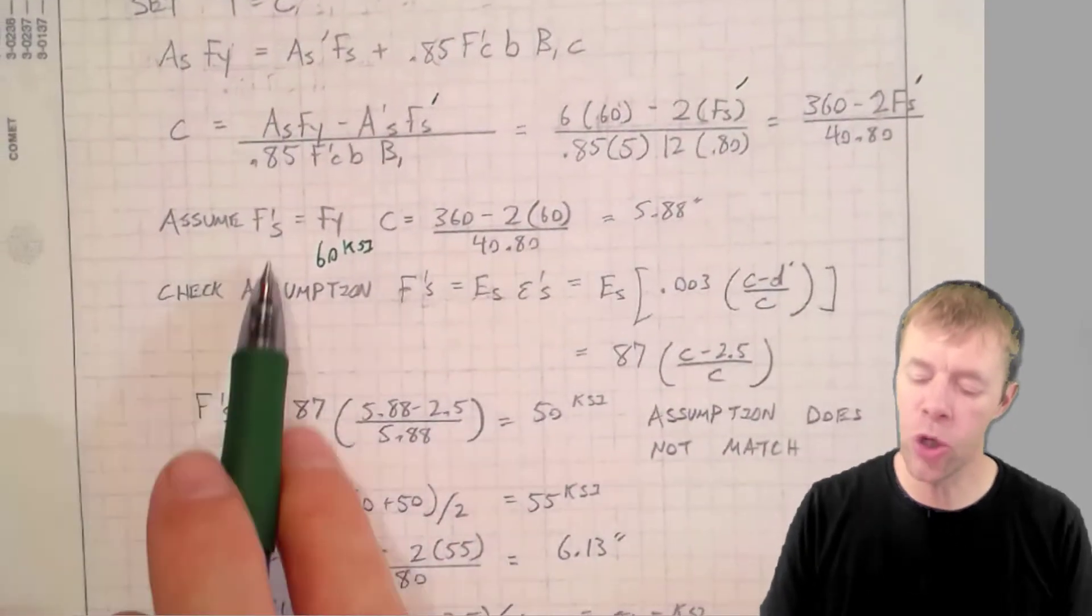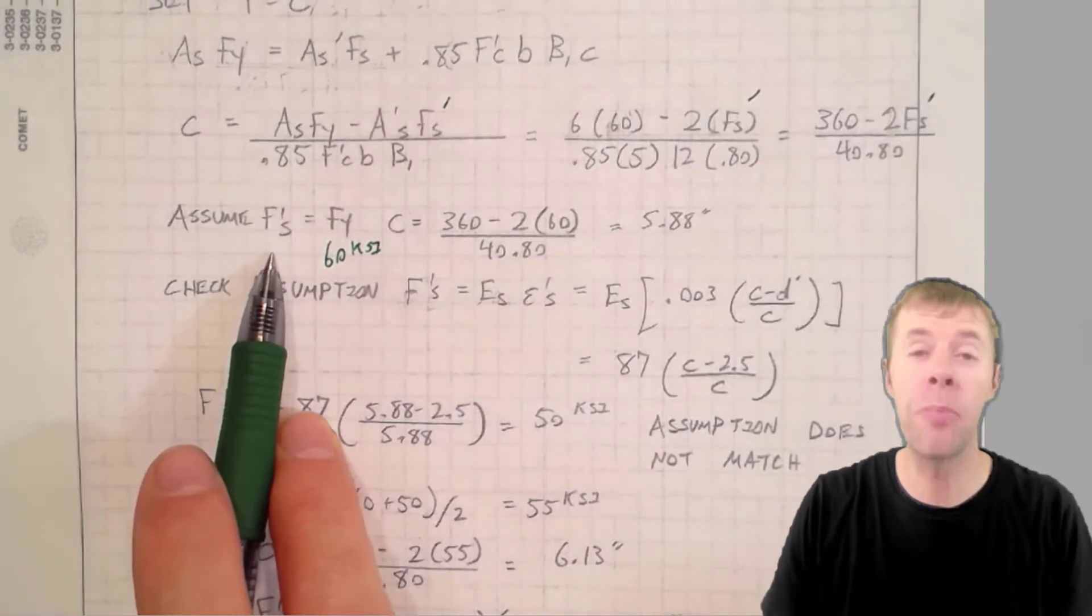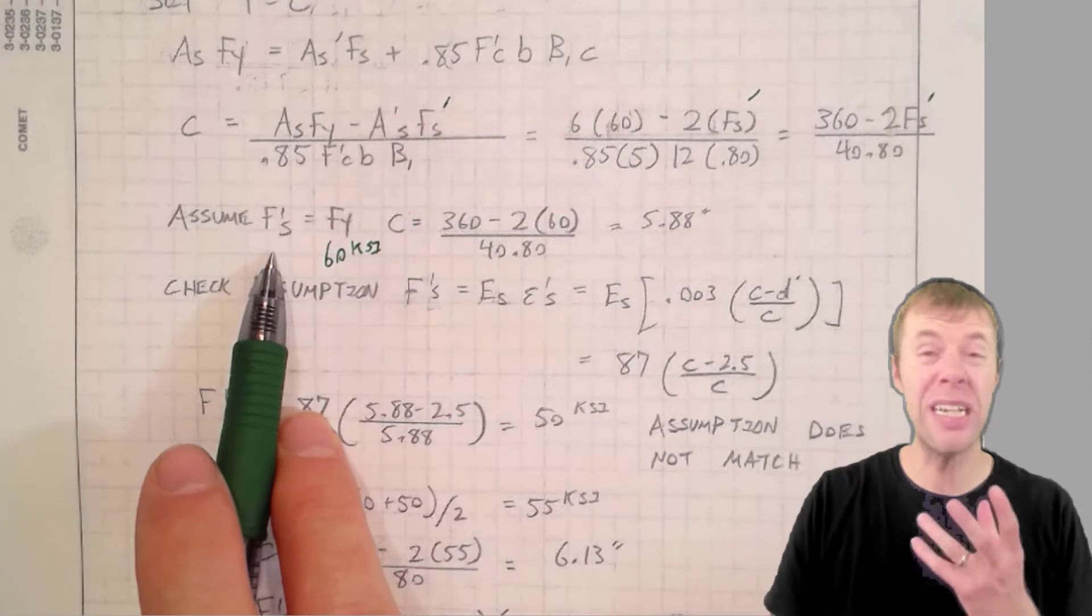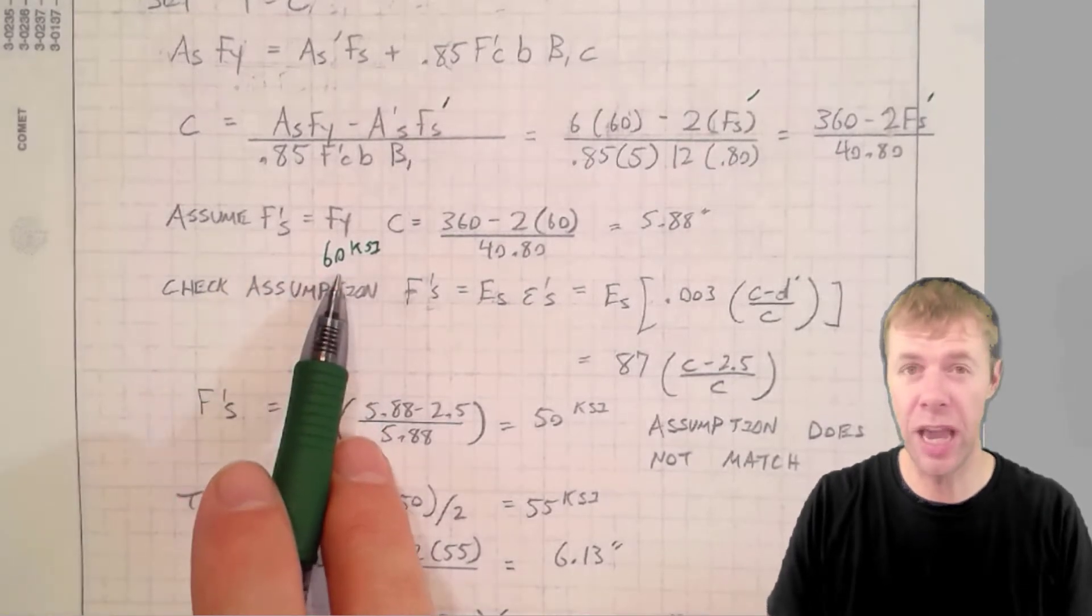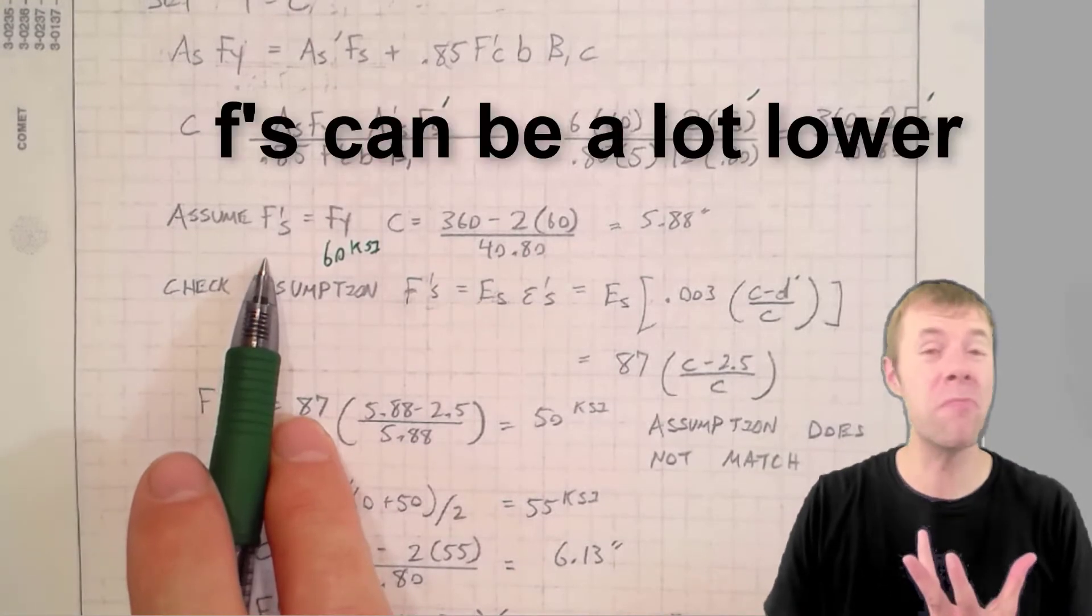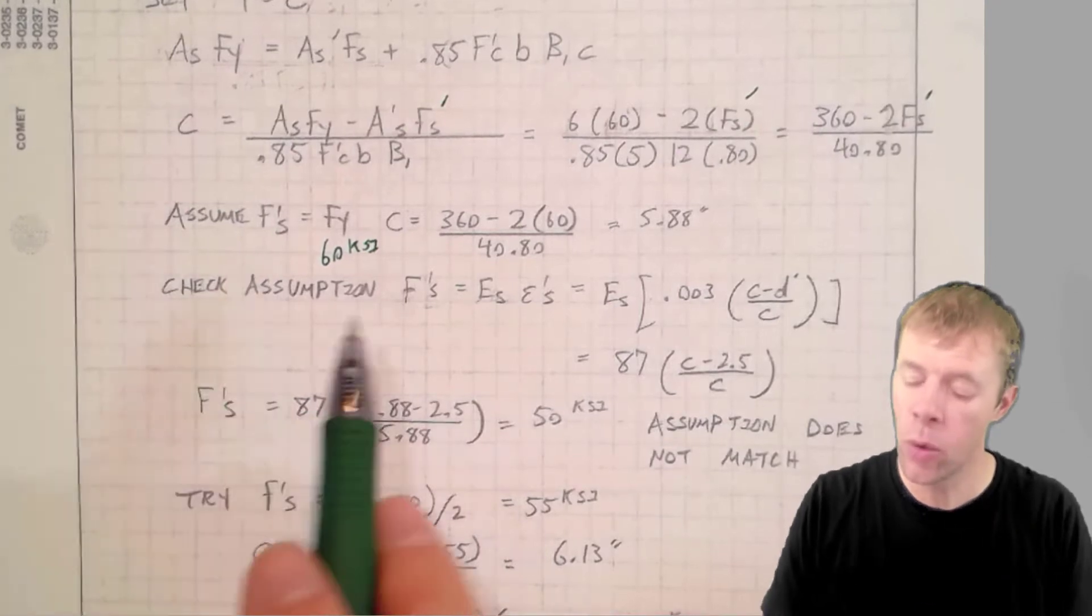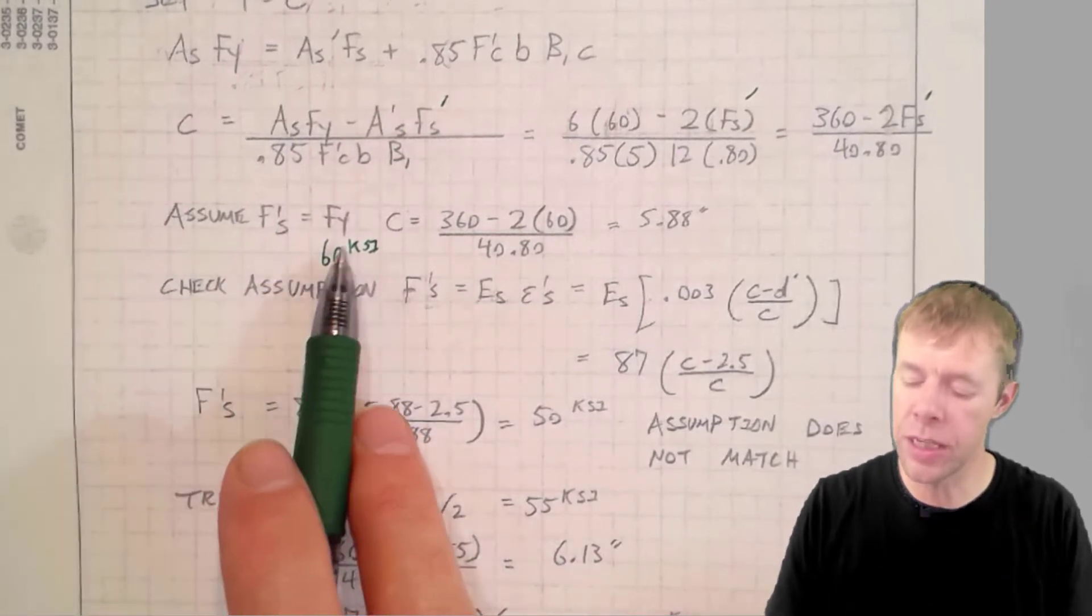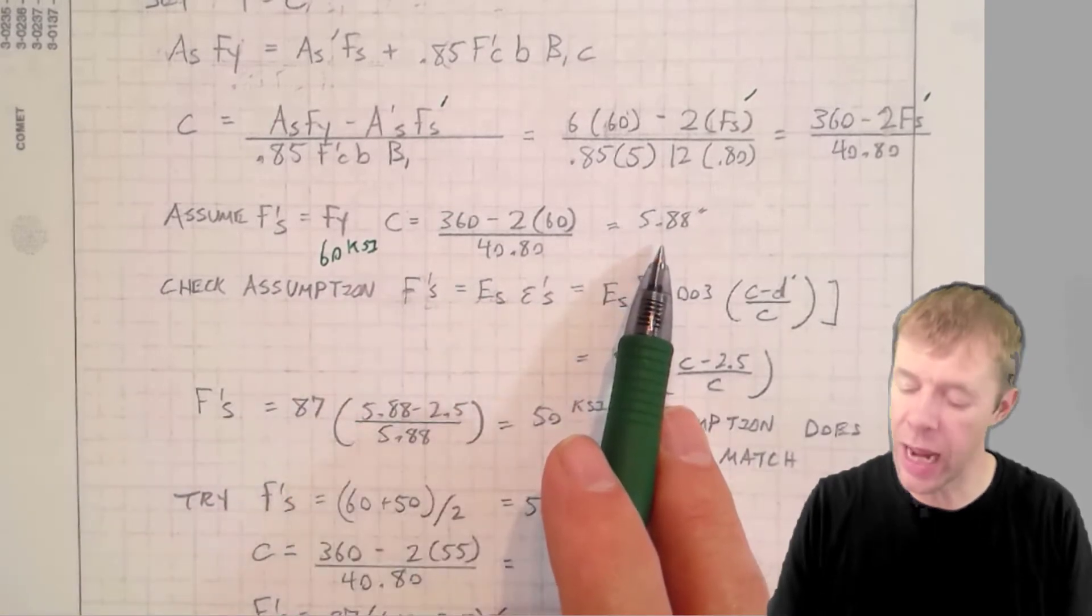Next, we're going to assume an F prime S. What number should you choose? It really depends on how big your beam is. If your beam is pretty deep, then you're going to want to assume this is pretty close to 60 KSI. If your beam is not very deep, then it may be a lot lower. Let's just pick 60 and see what happens. We're going to assume it's at yield. We're going to solve for what our C is, which in this case would be 5.88.